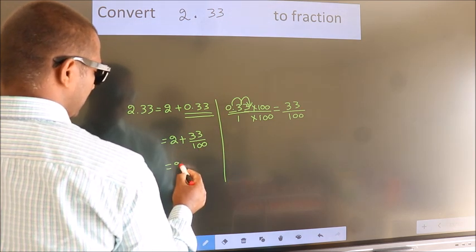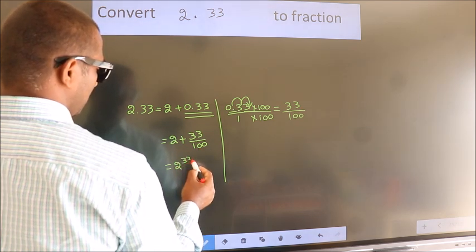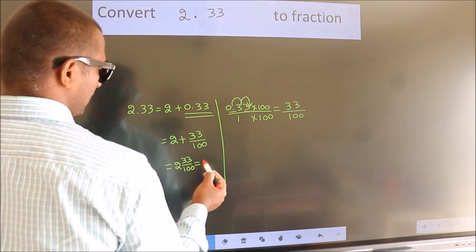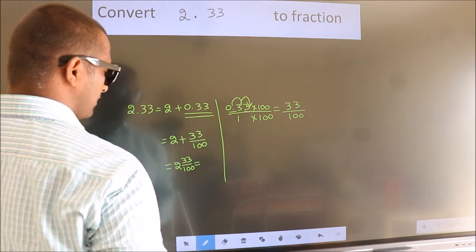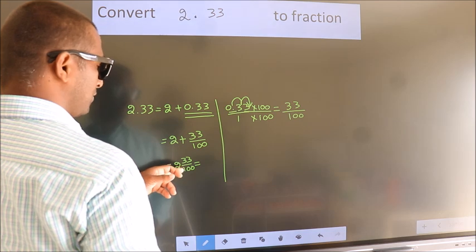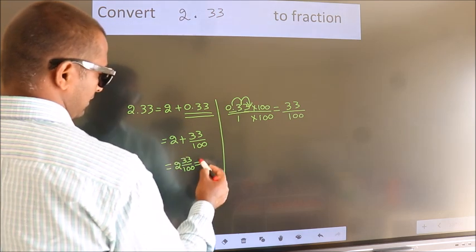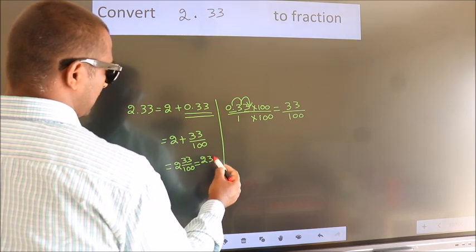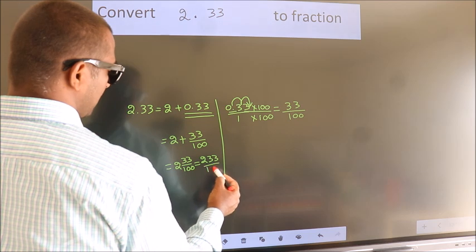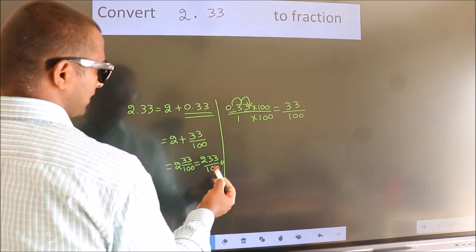2 plus 33 by 100. In mixed fraction it is 2 and 33 by 100. In improper fraction it is 2 into 100, 200 plus 33. 233 by 100 is our fraction.